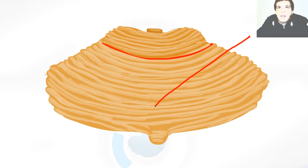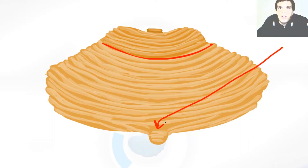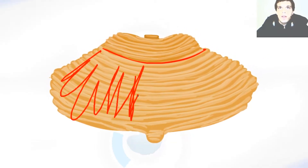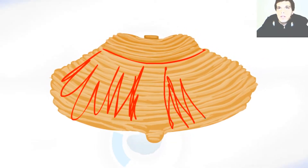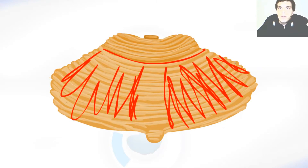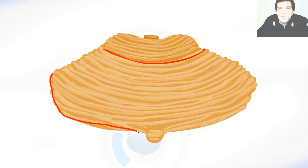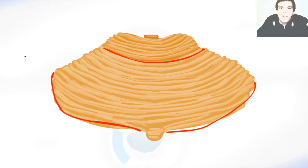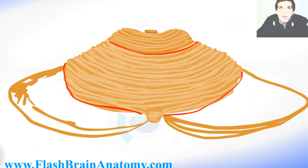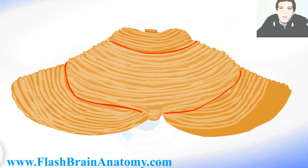Then we have the clivus somewhere over here and the folium over here. This all the way over here is the posterior part of the quadrangular lobe. As I said in the last video, this in the middle is the vermis. Then we have the posterior superior fissure over here that divides the posterior part of the quadrangular lobe from the superior semilunar lobe.